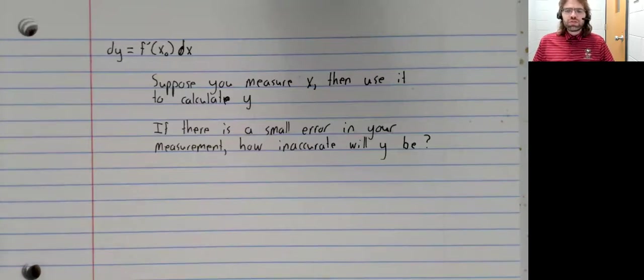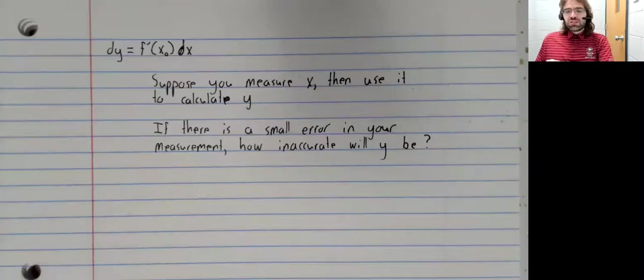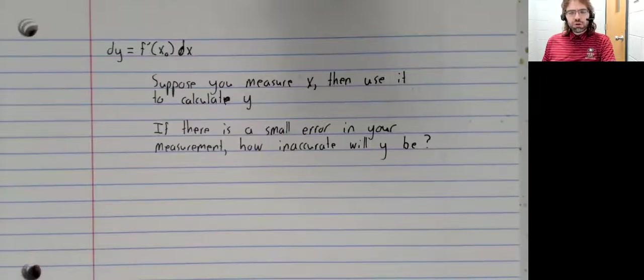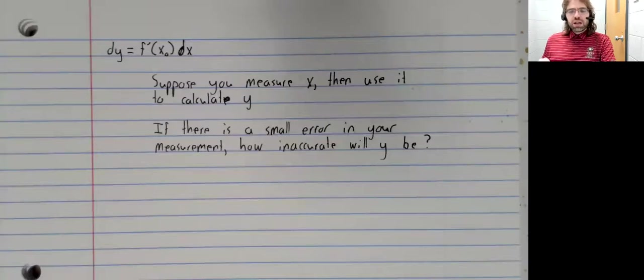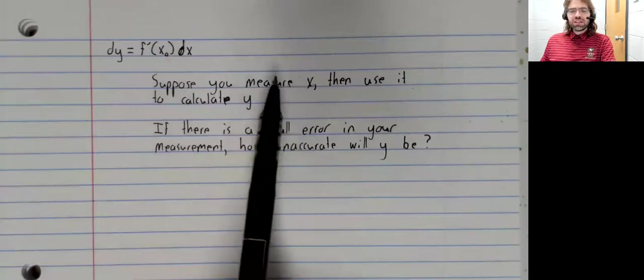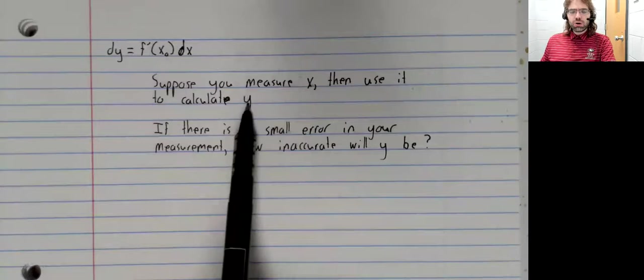there's going to be some amount of measurement error. Like, if you're measuring a distance, you're probably not going to be accurate to one tenth of an inch. If you're using a ruler, maybe you'll be accurate to an eighth of an inch. And that raises the question: you measured X, when you measured X there was some error, you used that value of X to calculate Y. How badly will the error in X reflect in the calculated value of Y?